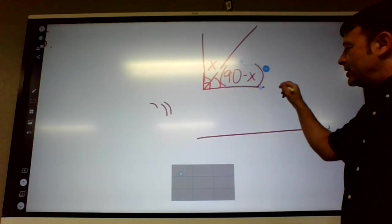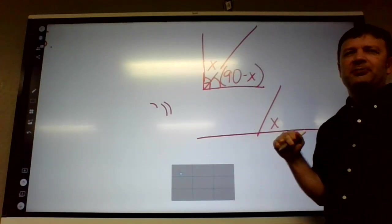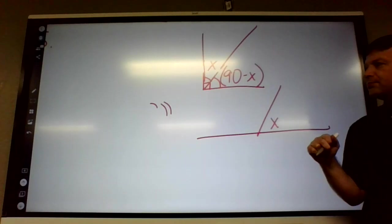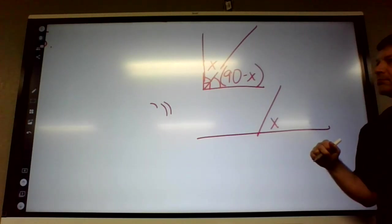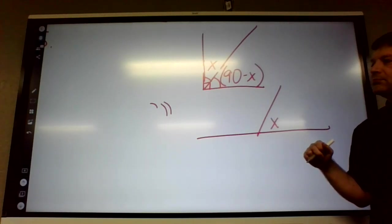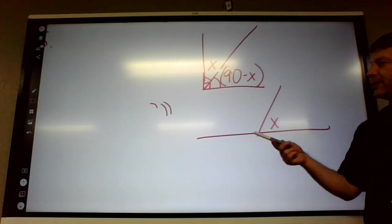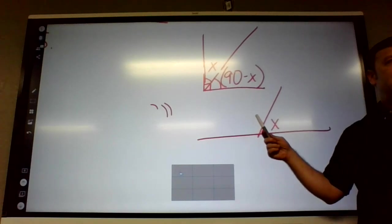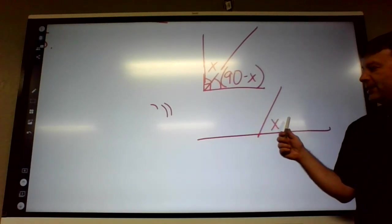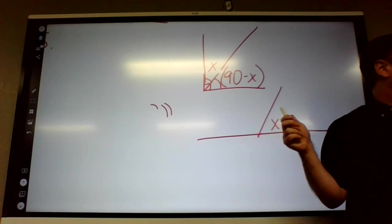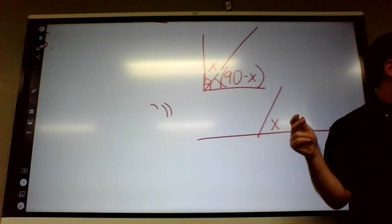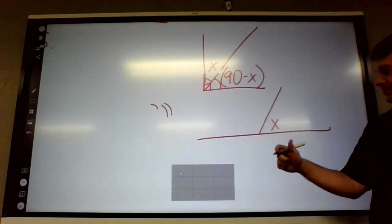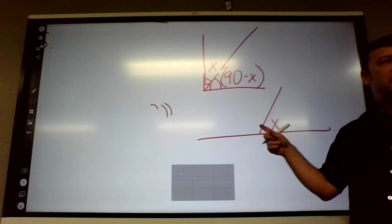Okay, so if they say the supplement of an angle, if this is X, do you guys remember supplement? 180. Supplementary angles add up to 180. Together they're 180. If this is X, what would this one be called? 180 minus X. It's whatever the difference of 180 and X is. This would be called the supplement of the angle.